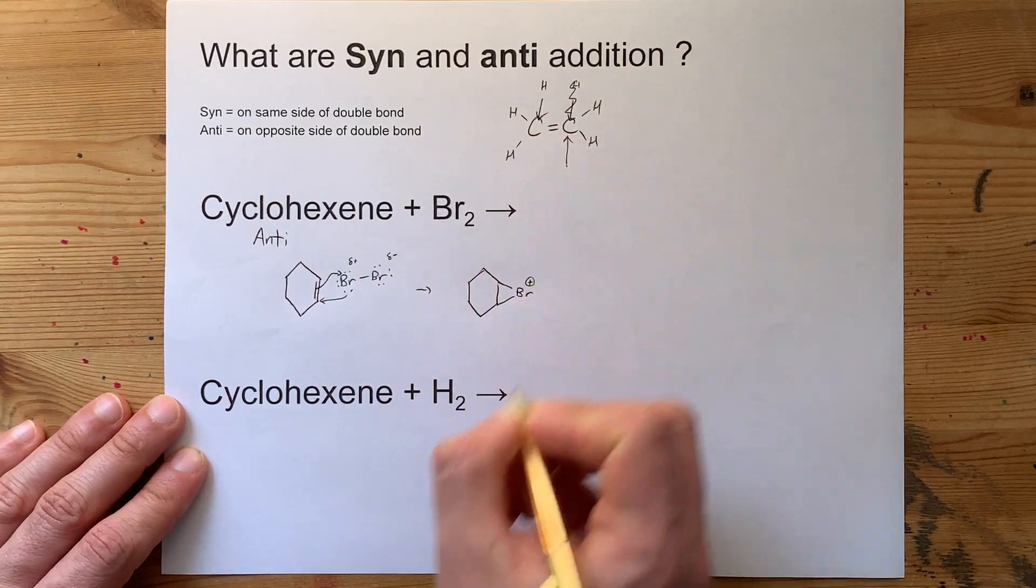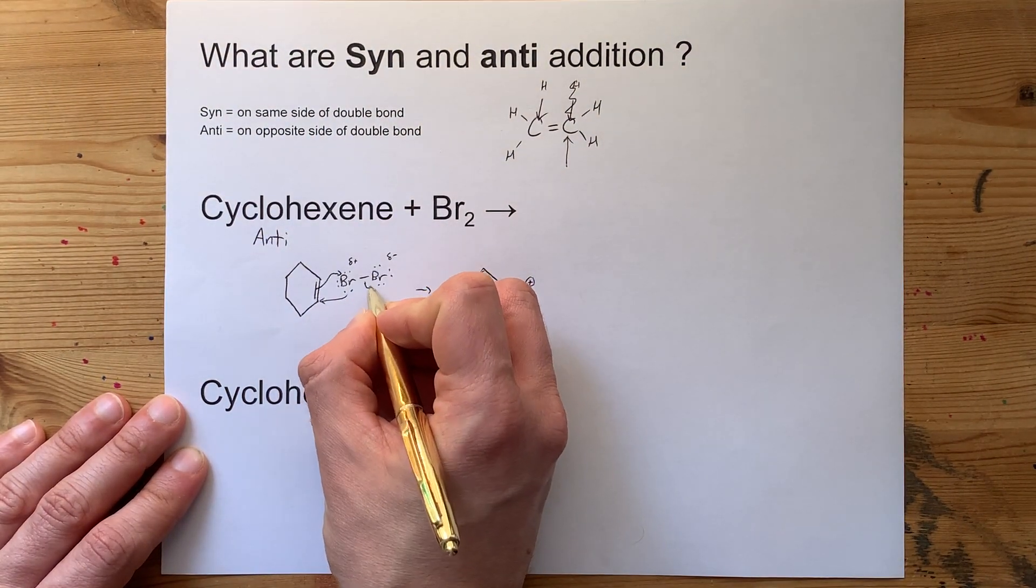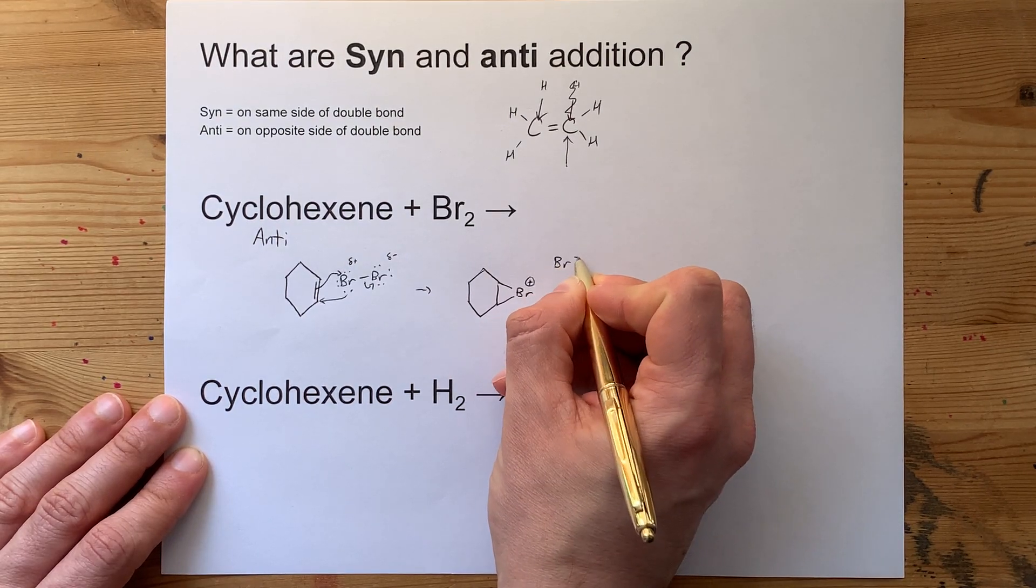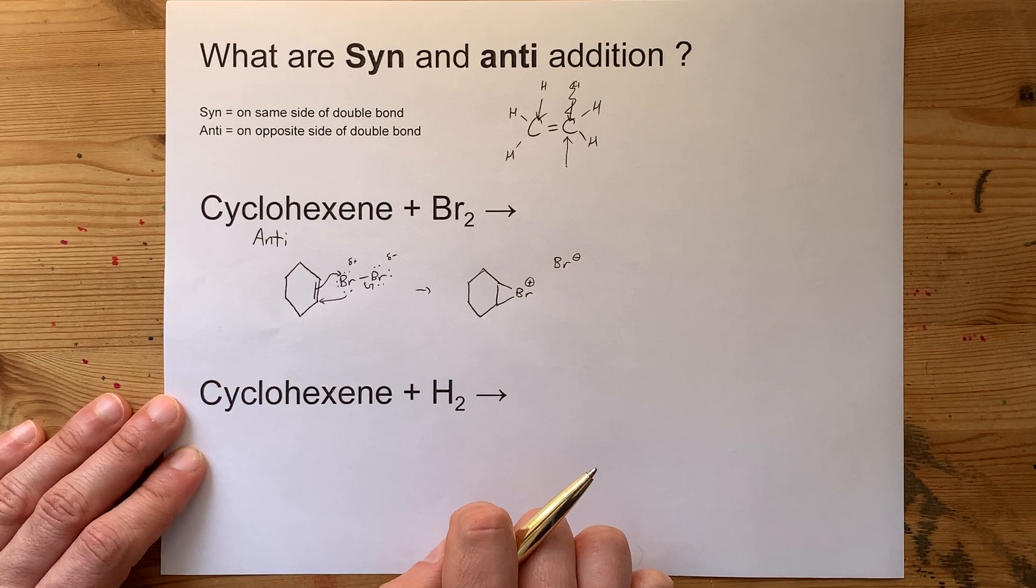It now has a formal charge of positive one, and the electrons from the bond here allow this bromine to have a formal charge of minus one. It's a bromide ion.